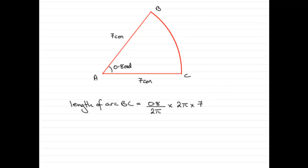So in this question you'll notice that the 2π's cancel, and you get the result that is the angle times the radius.